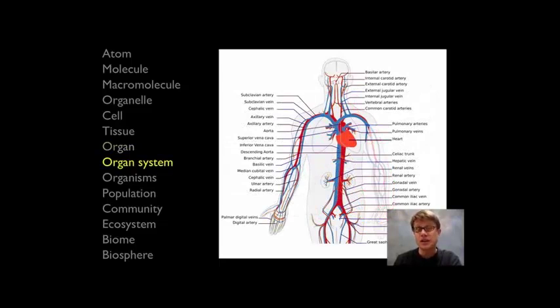That heart is sitting inside what's called an organ system. And so this would be the circulatory system. Here we have our red blood cell, but we also have the heart and all of these arteries and veins. And they're working together to move that red blood cell around your body.